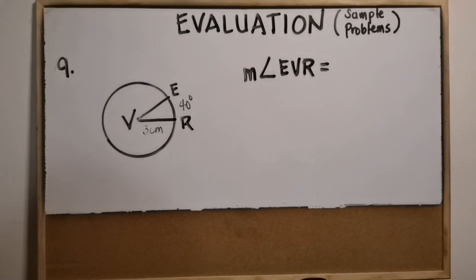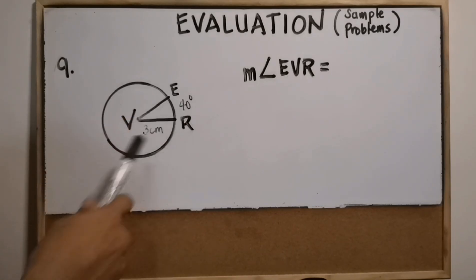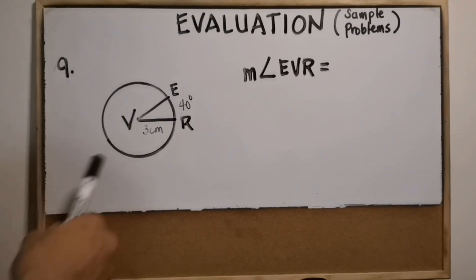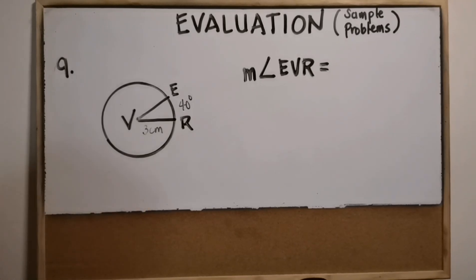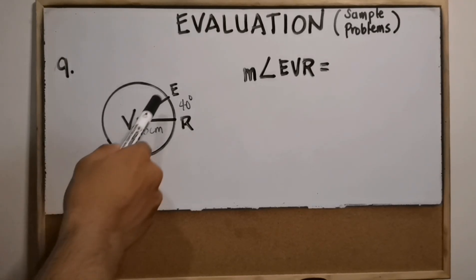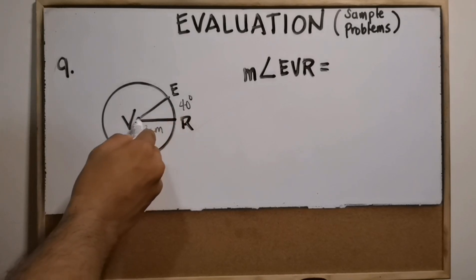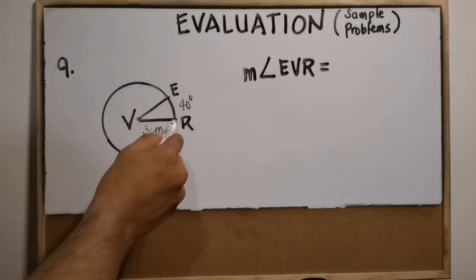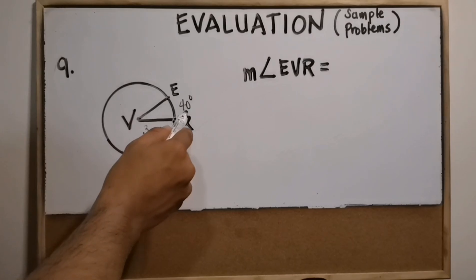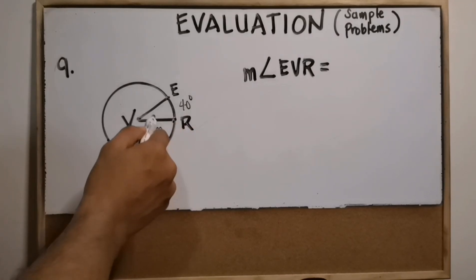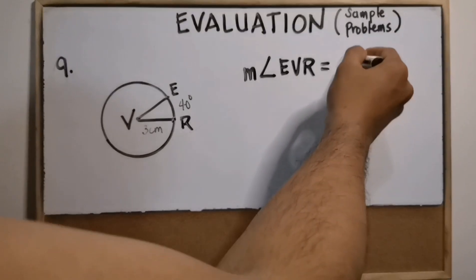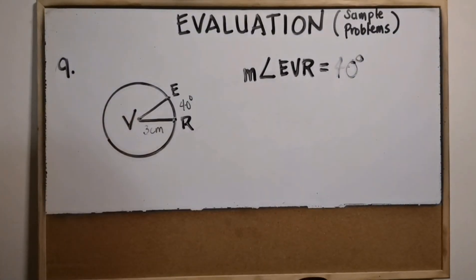Number nine: in the circle given, if the measure of arc ER is 40 degrees and its radius is 3 centimeters, what is the measure of its central angle EVR? The theorem states the measure of the central angle is equal to its intercepted arc. Since the intercepted arc is 40 degrees, the measure of central angle EVR is also 40 degrees.